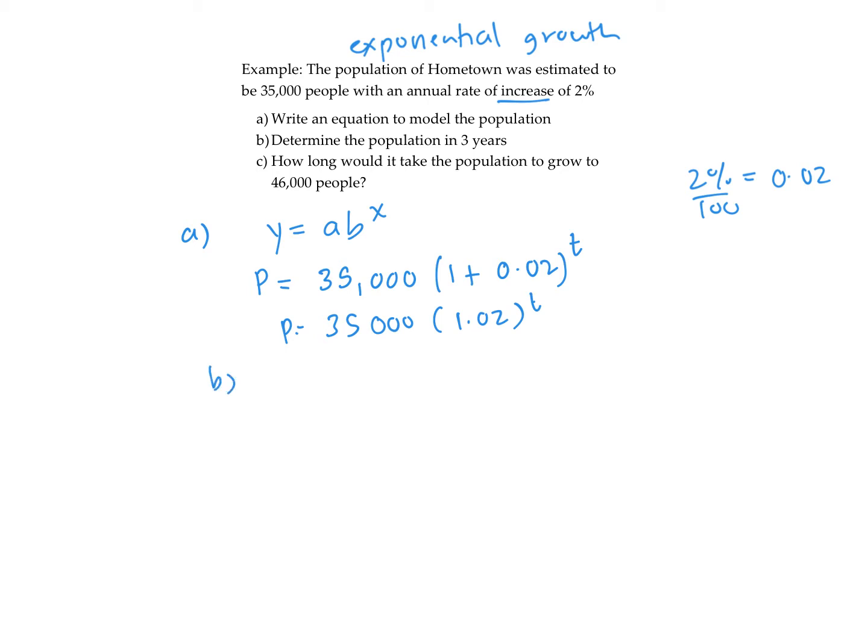Part b asks, what is the population in three years? We're going to do p of 3, so 35,000 times 1.02 to the power of 3. Remember with order of operations, we do the power first, then multiply by 35,000. We have a population of 37,142, rounding to the nearest person.